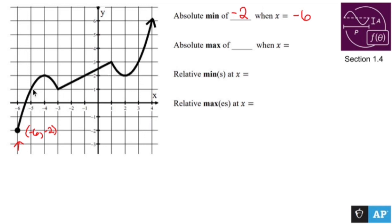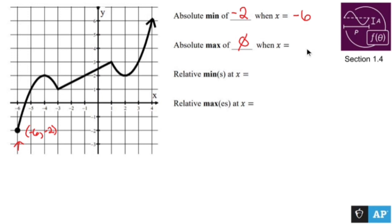The absolute maximum doesn't exist because this guy is going to keep going on forever. So there is no absolute maximum — it goes on forever and ever.